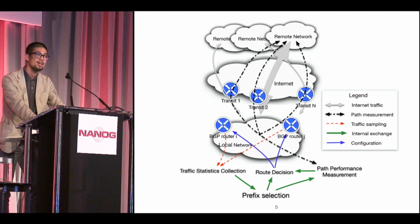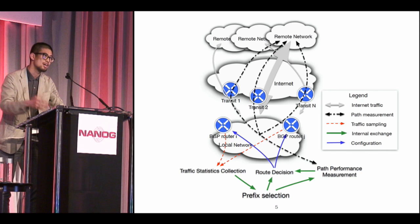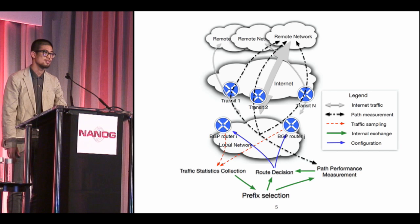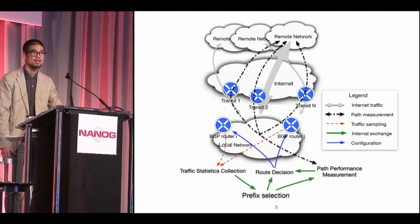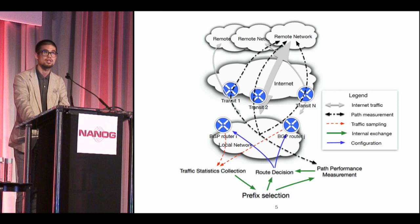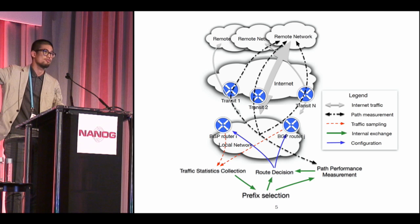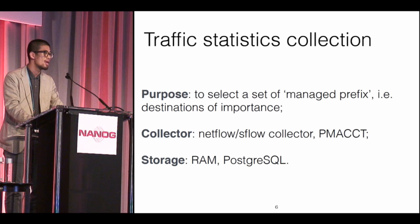Talking about efforts and challenges — think about this: we are going to measure the delay toward all possible destination networks via all possible transit providers, and there could be around 600K of them. I'm going to demystify some of the major building blocks of such a system, illustrated at the bottom of this architecture graph. You don't have to capture all of them right now; I will walk you through them one by one.